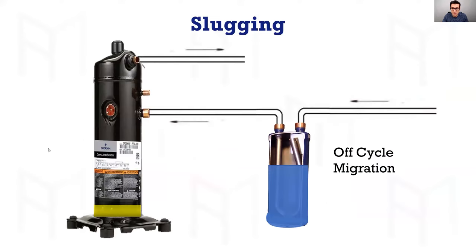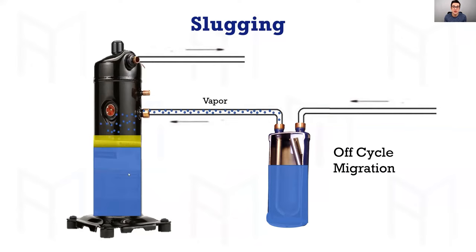Let's get into it. Here's an example of a system with the compressor off. How a slug happens in a refrigerant-cooled compressor — scroll compressors, large semi-hermetic compressors like 3D, 4D, 6D Copeland compressors. When they're off, refrigerant can travel through the system as a vapor — from the evaporator, or even from the accumulator. If that accumulator is warmer than the actual compressor, refrigerant will start traveling through and condense down into the oil.